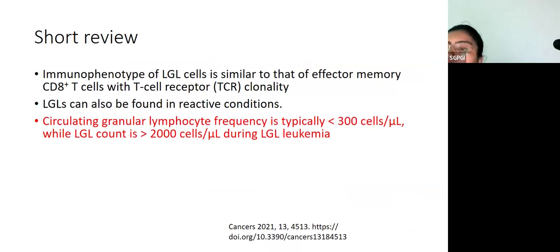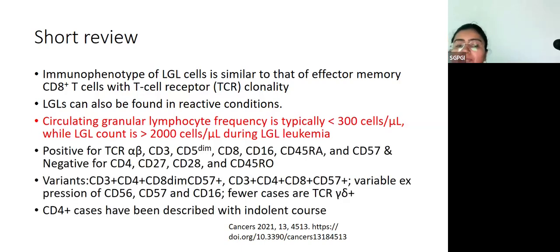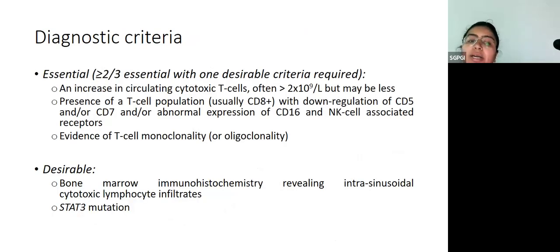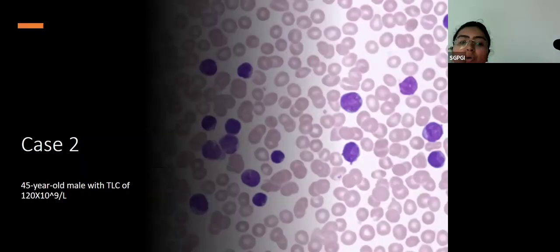When we talk about LGLs, typically when you have proliferations, they are usually low in count, while LGL count is higher for LGL leukemia. Having said that, it is not necessary that all LGL leukemias will have a count of over 2000. There are some patients with persistent cytopenias who definitely have LGLs. Most of the time, you will have positivity for CD8 and CD5 will be down-regulated. Variants which are CD4 positive have also been described and CD4 positive cases will have an indolent course. STAT3 and STAT5B mutations: STAT3 mutations are more often seen in the CD56 negative T-LGLs, while for STAT5B, it is more in the indolent T-cell lymphoproliferative disorder.